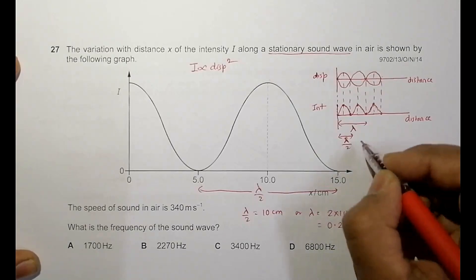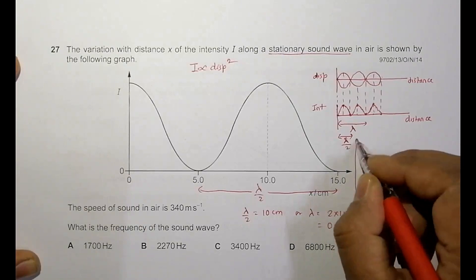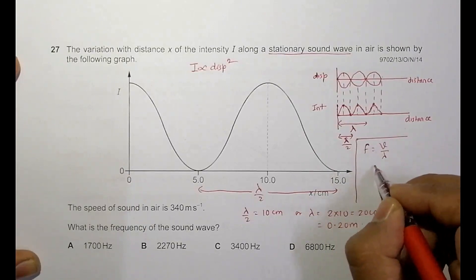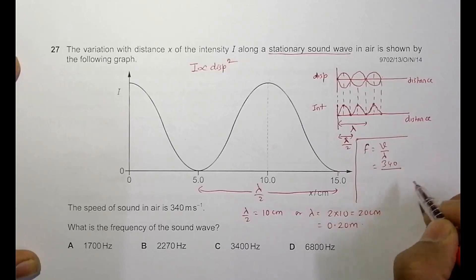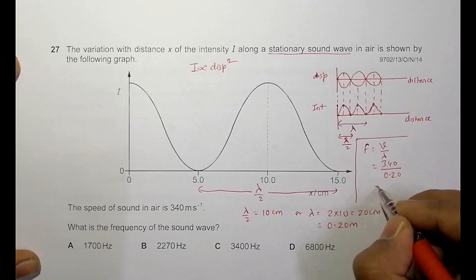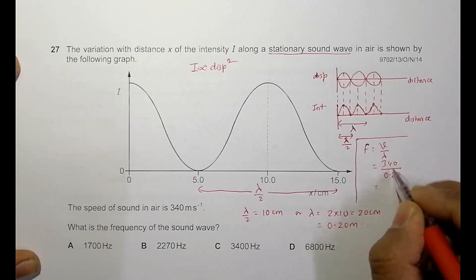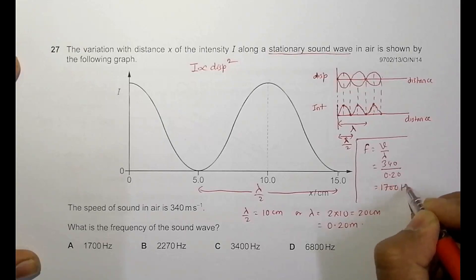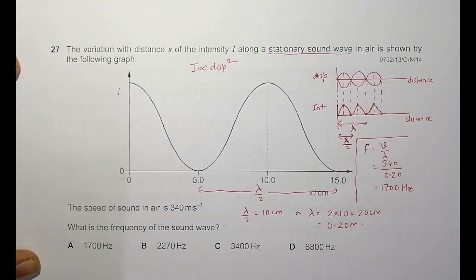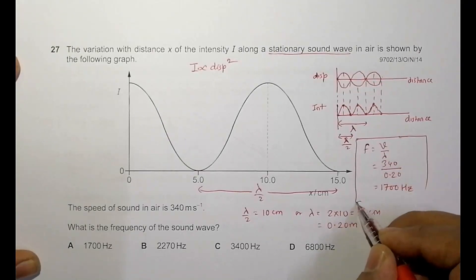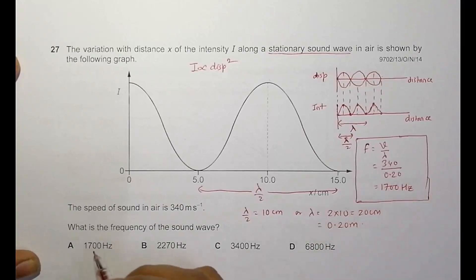Now we can calculate the frequency. Frequency equals velocity divided by lambda. The velocity is 340 meters per second and lambda is 0.20 meters. So frequency equals 340 divided by 0.20, which gives 1700 hertz. The frequency of the sound wave is 1700 hertz, and the answer is choice A.